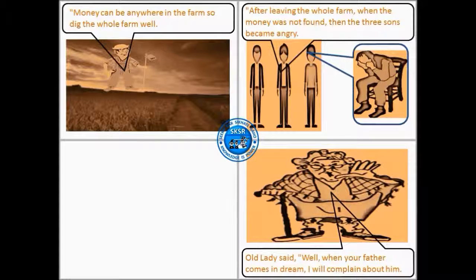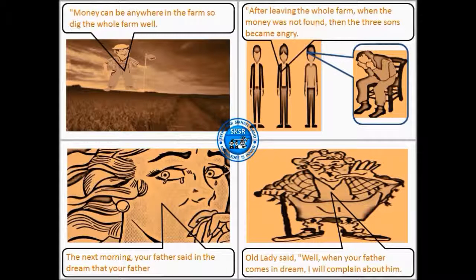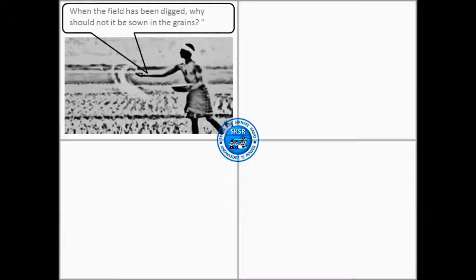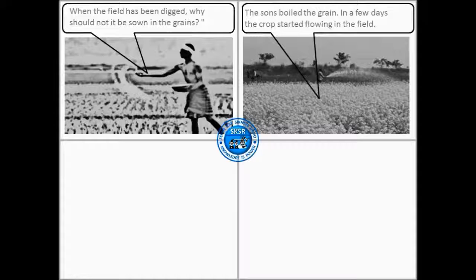The old lady said, well, when your father comes in a dream, I will complain about him. The next morning, your father said in the dream that when the field has been dug, why should it not be sown with grains? The sons sowed the grains and in a few days the crop started growing in the field.